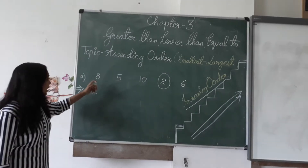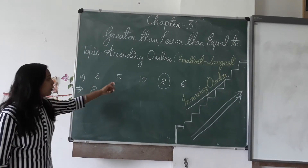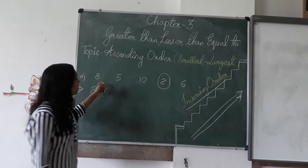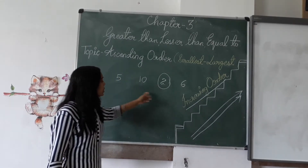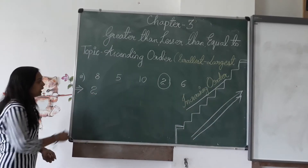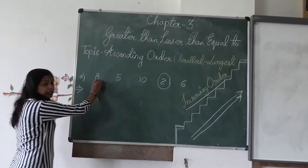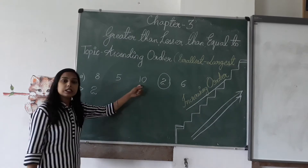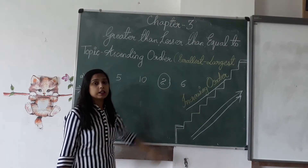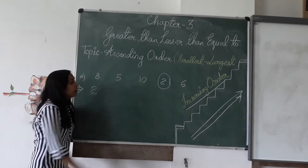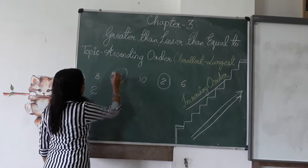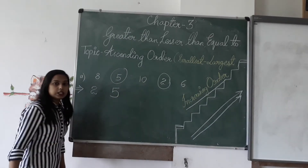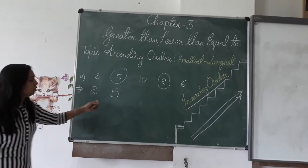Now which numbers are left? Eight, five, ten and six. Now identify the smallest number here. Five is the smallest number. So we will write two, then five.